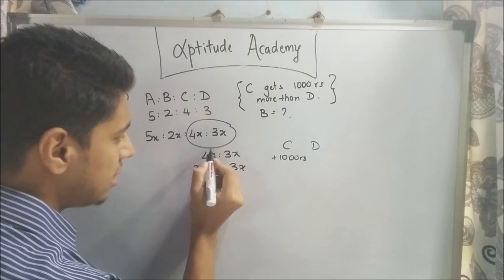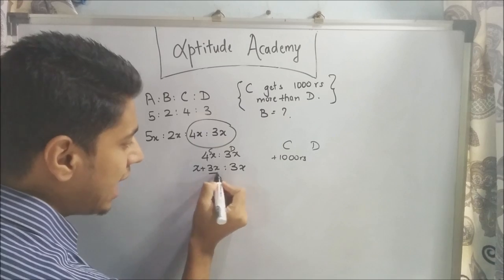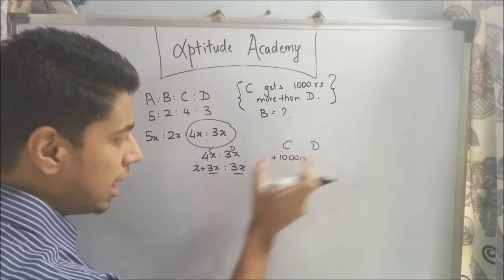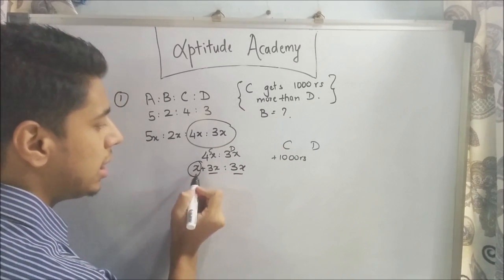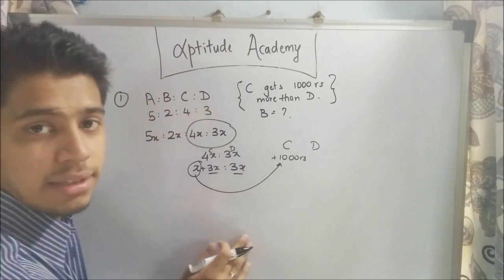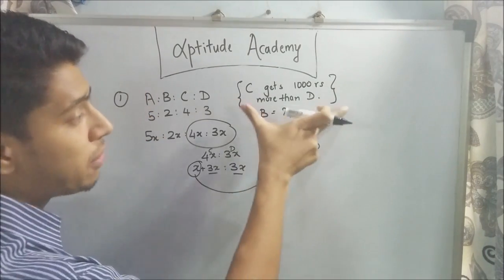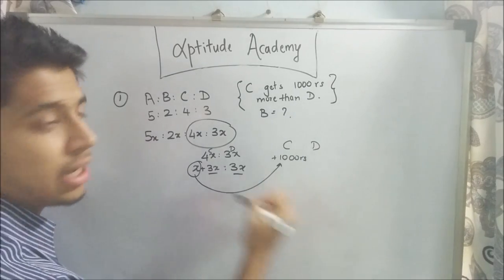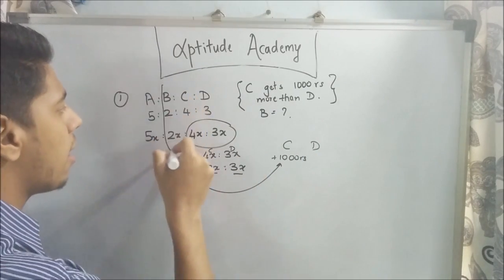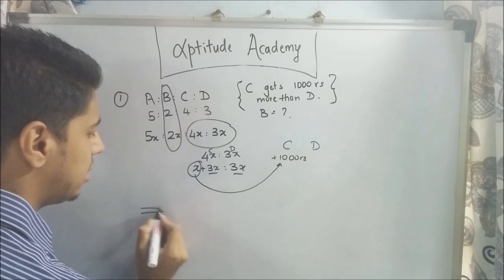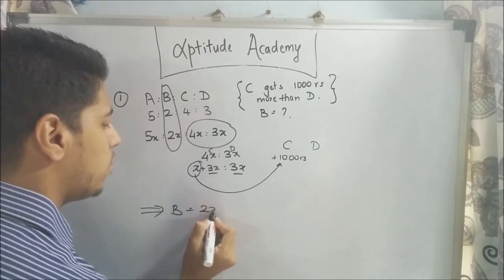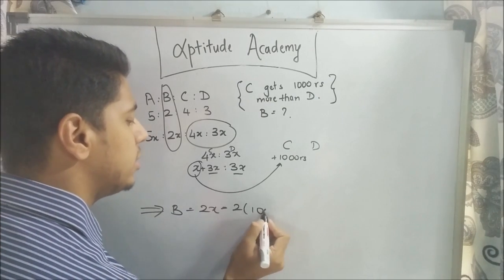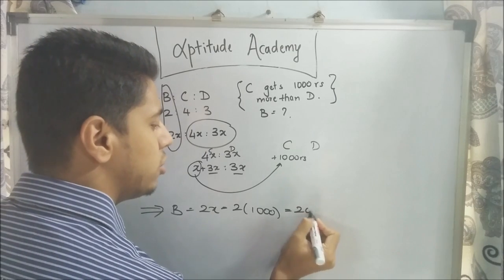This is C, this is D. 3x and 3x are the same, that's the common part. The extra amount is 1000 rupees. From this statement, you deduce that x equals 1000 rupees. B's share is 2x, which is 2 times 1000, equals 2000 rupees.